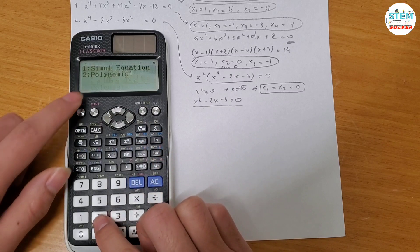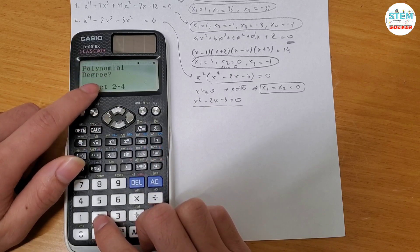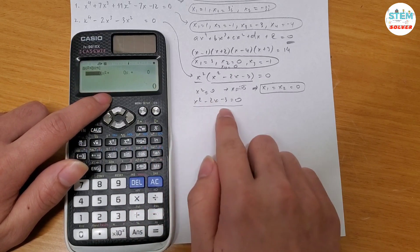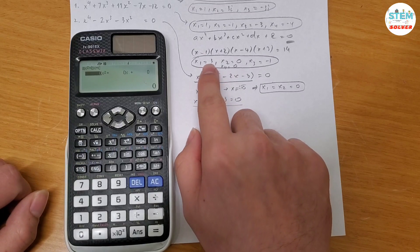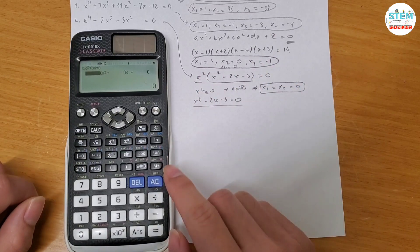alpha, a, and then 2, and then select the polynomial degree. So hit 2. Type in this equation. You should expect to get 3 and negative 1. So let me show you real quick.